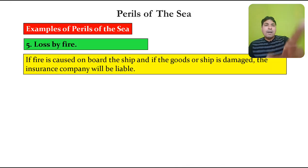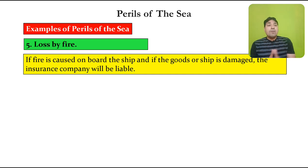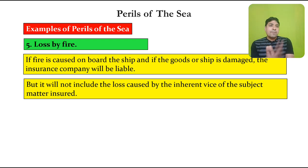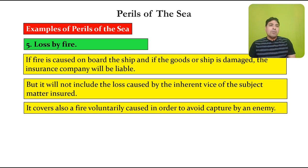The next example is loss by fire. If fire is caused on board the ship and the goods or ship is damaged, the insurance company will be liable. But it will not include the loss caused by the inherent vice of the subject matter insured — if the subject matter itself has a defect, for example if it is highly explosive, and fire results from that defect, the insurance company will not be liable.